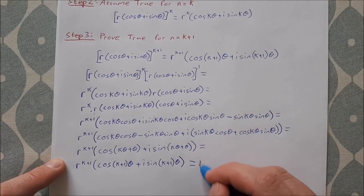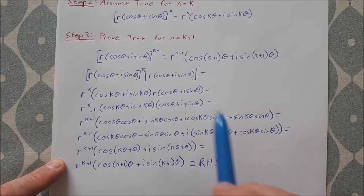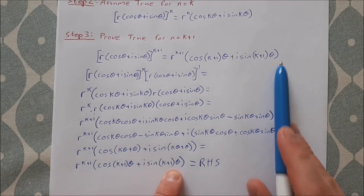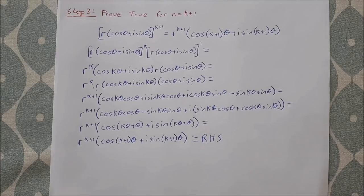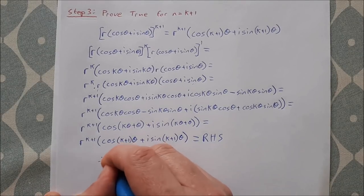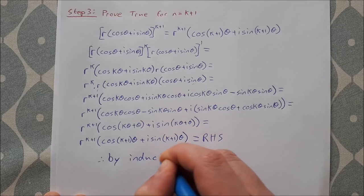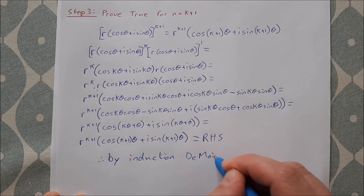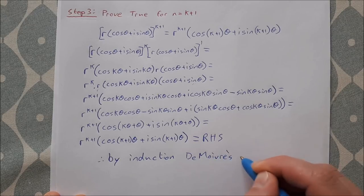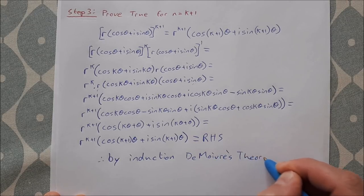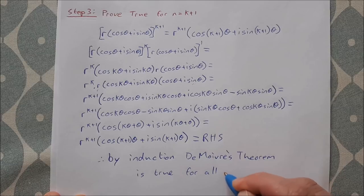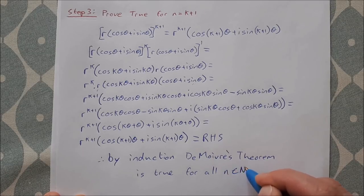That is equal to the right-hand side I was searching for: r to the k plus 1, times cos k plus 1 theta plus i sine k plus 1 theta. So the left-hand side equals the right-hand side. Therefore, by induction, De Moivre's theorem is true for all n, an element of the natural numbers.